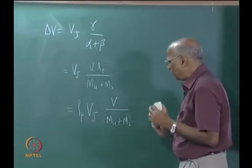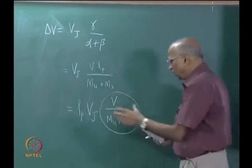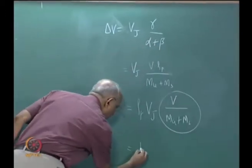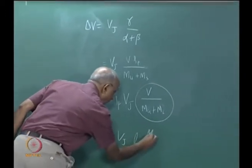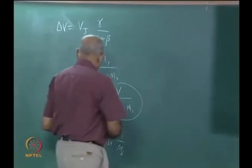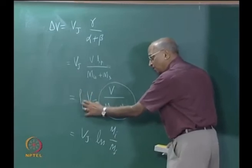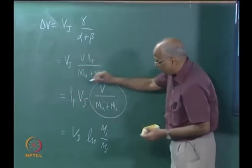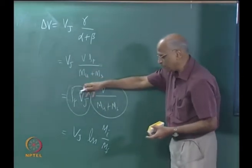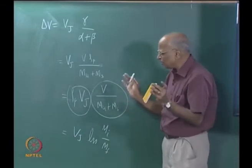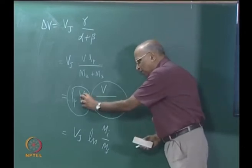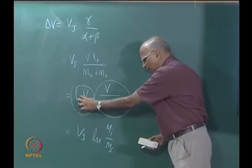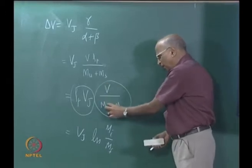Comparing this to the standard expression delta V = v_j × ln(m_i/m_f), we find that for a booster or firecracker, instead of v_j being the figure of merit, it becomes the density of the propellant times v_j. Since the density of hydrogen is small, using cryogenic rockets with hydrogen and oxygen as booster stages is not that advantageous. If you use solid propellant, which is a very dense material, it may be better for booster stages.